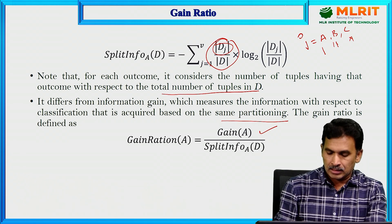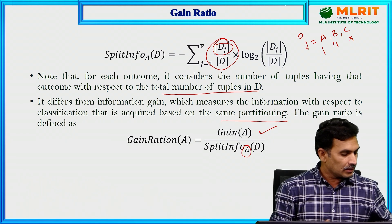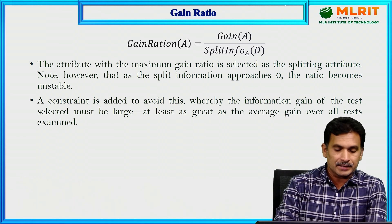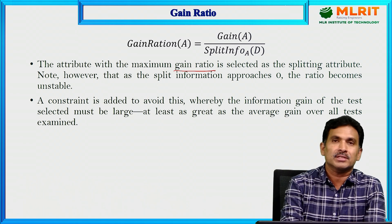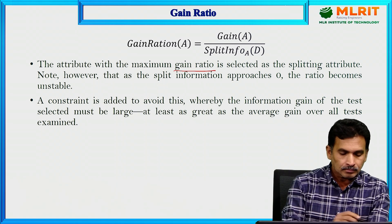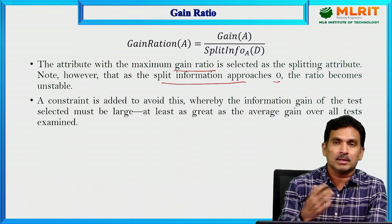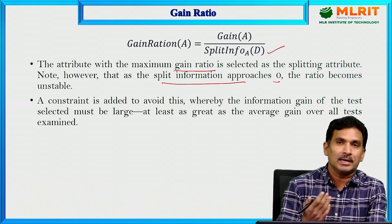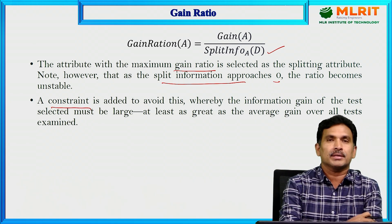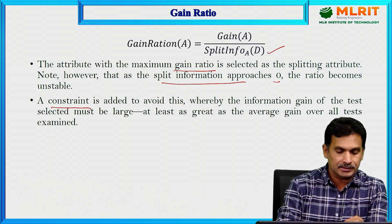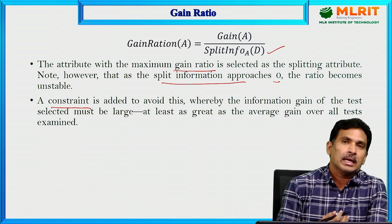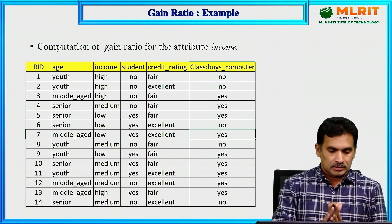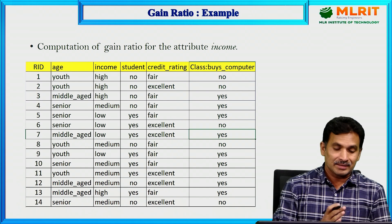However, when split information approaches 0, the ratio becomes unstable. To avoid this, a constraint is added: the information gain of the test selected must be at least as large as the average gain over all tests examined. Now let us take the same dataset we used to calculate information gain and compute the gain ratio for the attribute income.